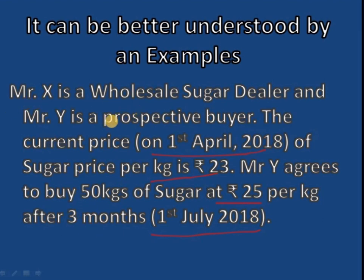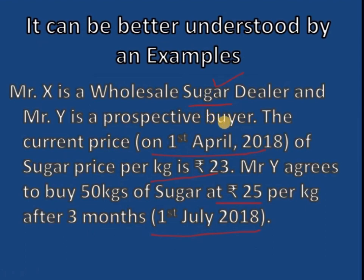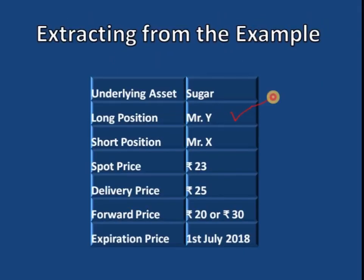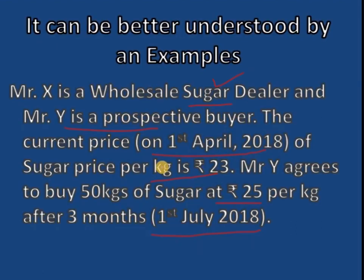So Mr. X is a dealer and Y is a buyer. The current price on 1st April 2018 is 23 rupees, and Mr. Y agrees to buy 50 kg of sugar from Mr. X at 25 rupees per kg after 3 months. The underlying asset is sugar. Since Mr. Y is the prospective buyer, he is in a long position, and Mr. X is in a short position. The spot price at the time of contracting on 1st April 2018 is 23 rupees.